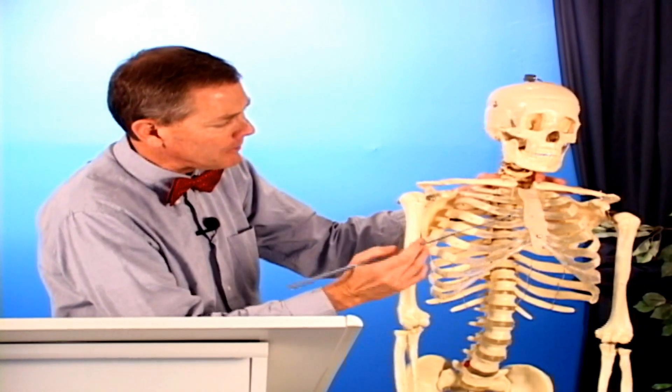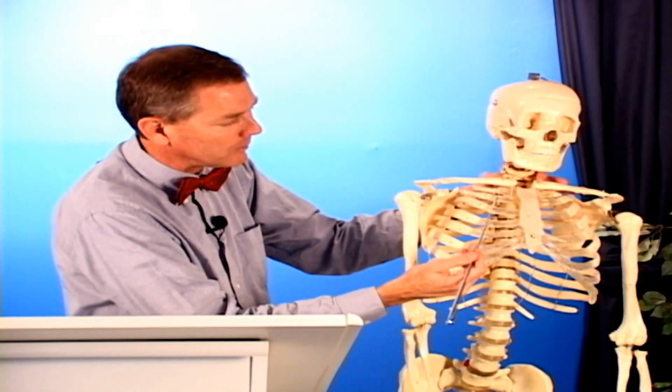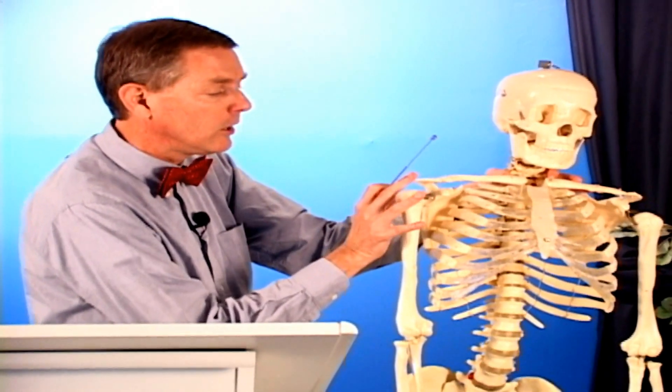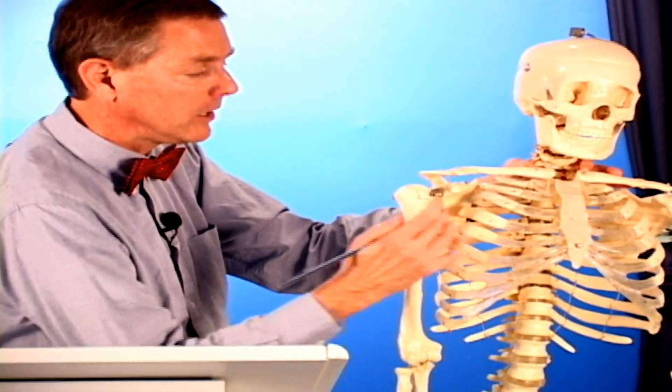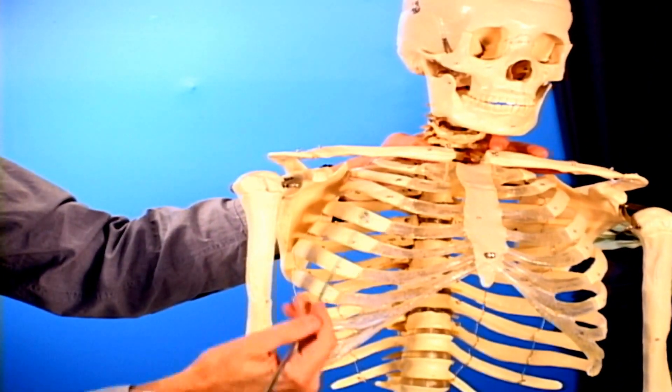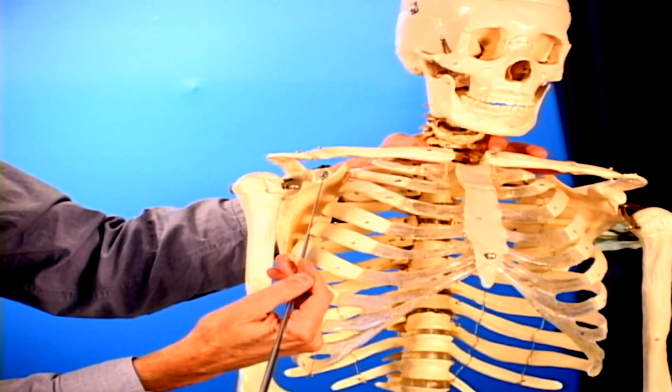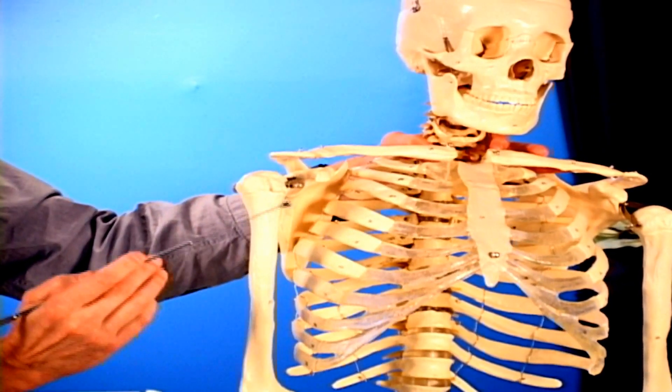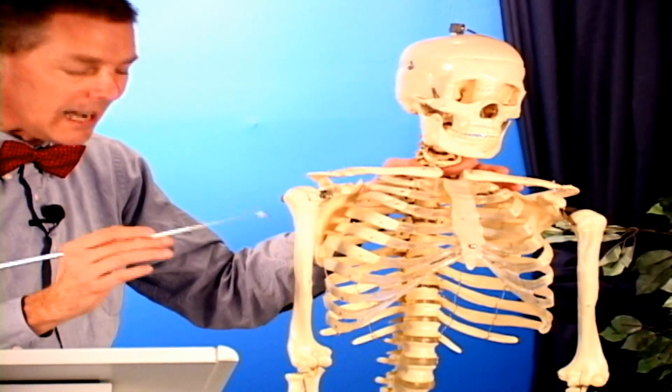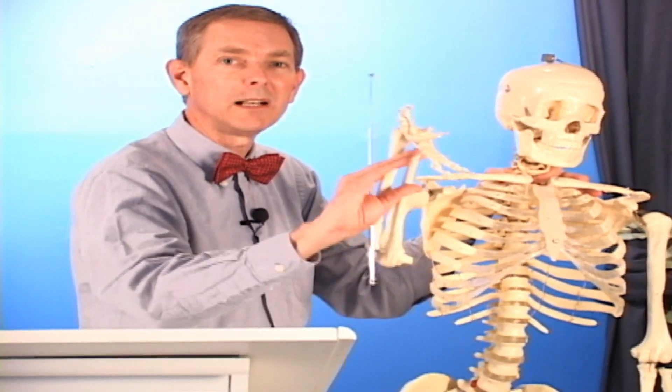The pectoralis minor comes from several ribs in the upper region and attaches to the coracoid process, pulling the scapula forward and down. I can attach the pectoralis minor to the girdle as well. Why is that important? Because I can have no distal mobility—I can't move anything distally.